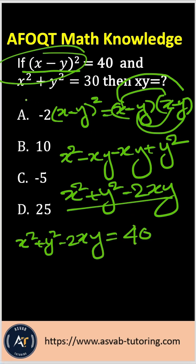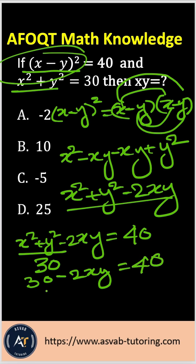Now x squared plus y squared equal to 30, so this part equals to 30. So 30 minus 2xy equal to 40. Now subtract both sides by 30.